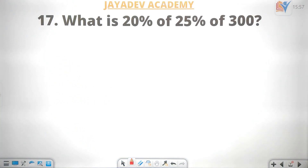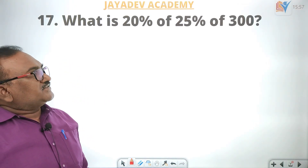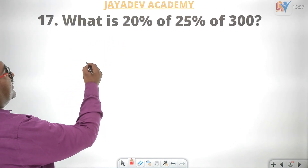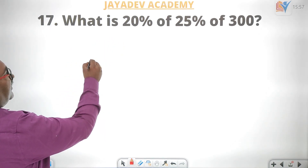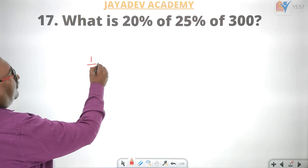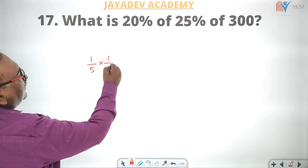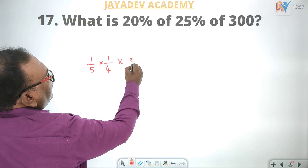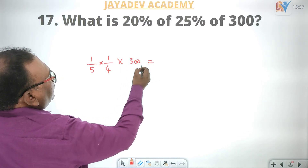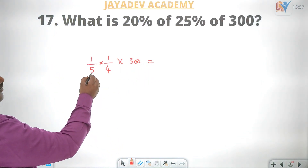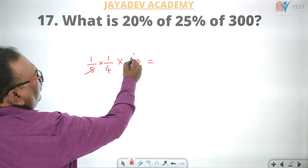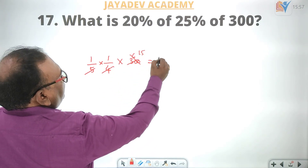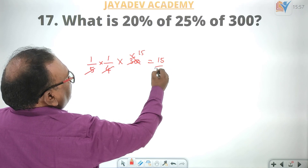What is 20% of 25% of 300? Using fraction law: 1 by 5 into 25% which is 1 by 4, into 300. The answer is 15.